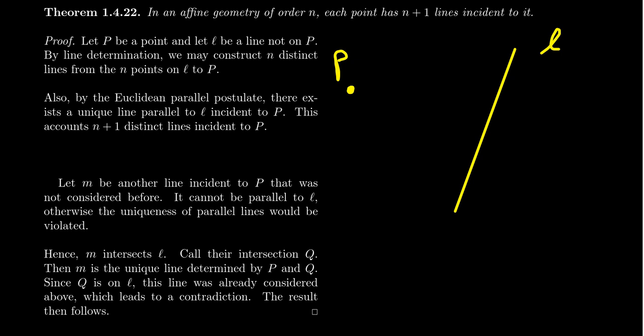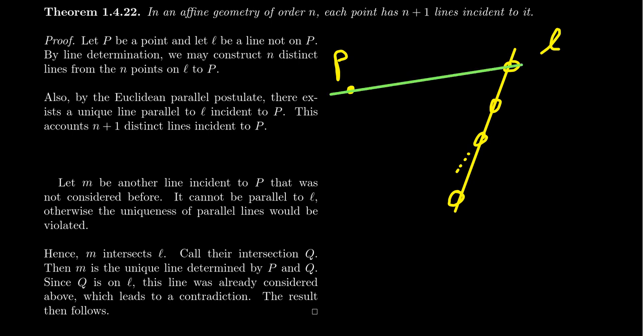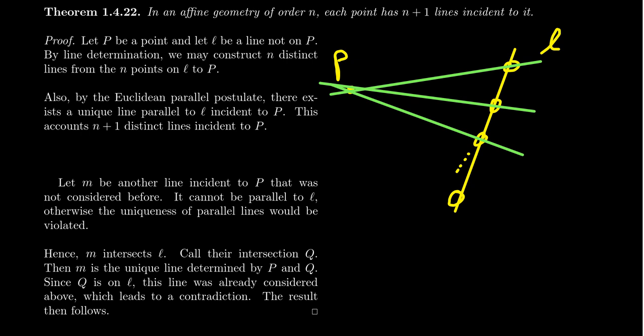Affine geometry is incidence geometry with the Euclidean parallel postulate. Since this is an affine geometry of order n, line L has n points on it, because all lines in affine geometry have n points. Note that in this proof — and all proofs in this video — n need not be finite; this could be an infinite cardinal as well, though diagrams are drawn as if finite. Using line determination, we construct a unique line from P to each point on L, giving us n lines.